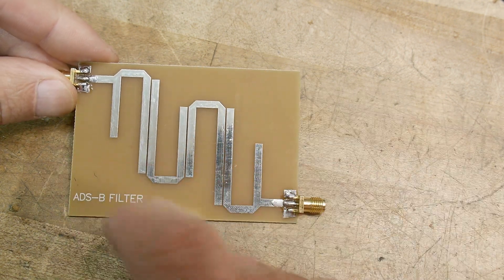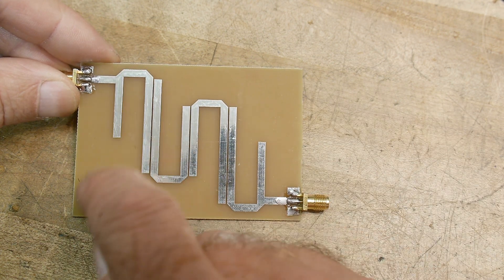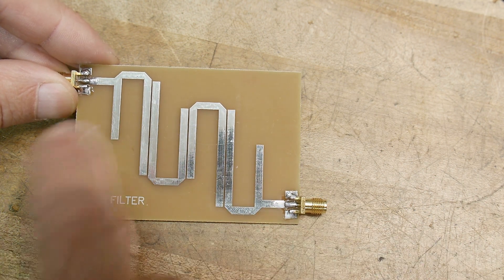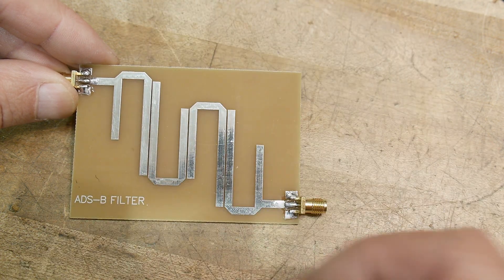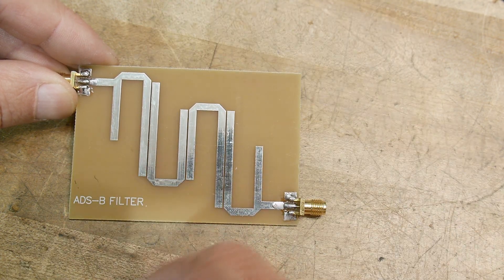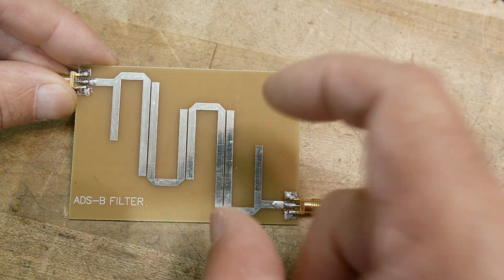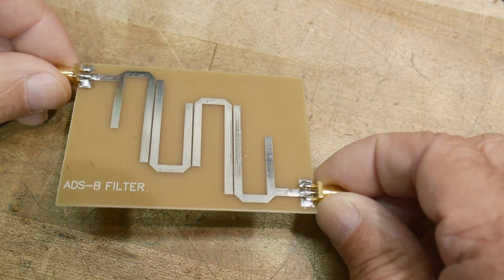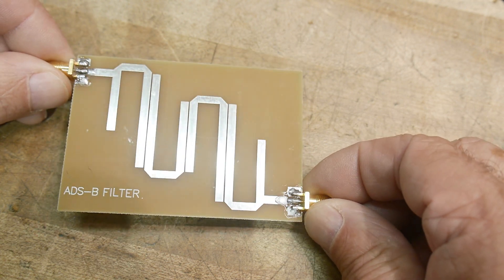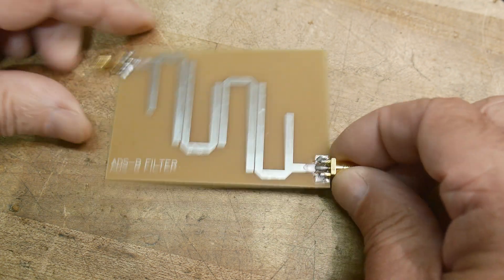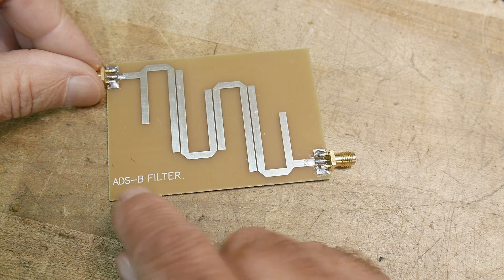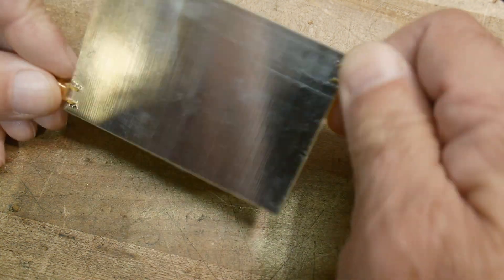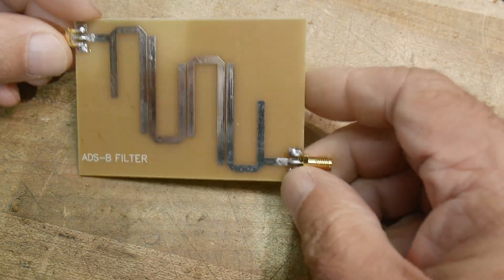So it is a bandpass filter. There is some resonant frequency that couples in this thing. You can imagine that these look sort of like a Yagi antenna, these are cut to length to match certain things. There's stubs and there's a length of resonance and then there's capacitive coupling between those elements, and it all adds up to a bandpass filter. This is marked ADS-B filter.